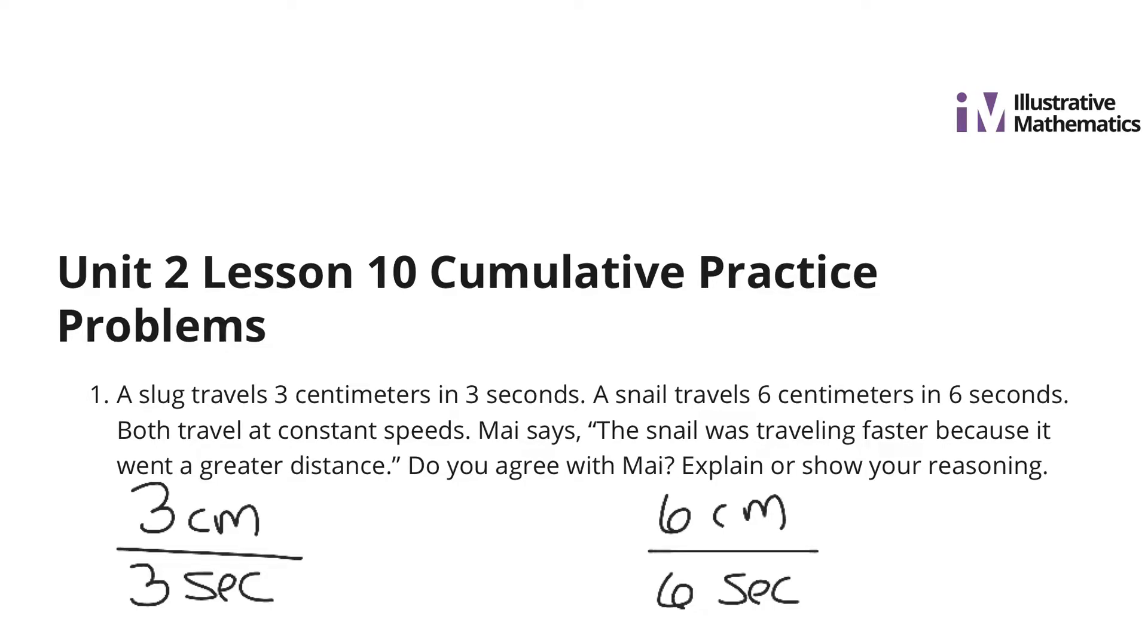Well, no, I don't. If we simplify this down to how far do they go in 1 second? If I divide the top and bottom of this ratio here by 3, we would get 1 centimeter in every 1 second. And if we simplify the snail by dividing by 6 on the top and bottom here, we would end up with 1 centimeter for 1 second. And so they both simplify to be the exact same thing. So do I agree with Mai? No.